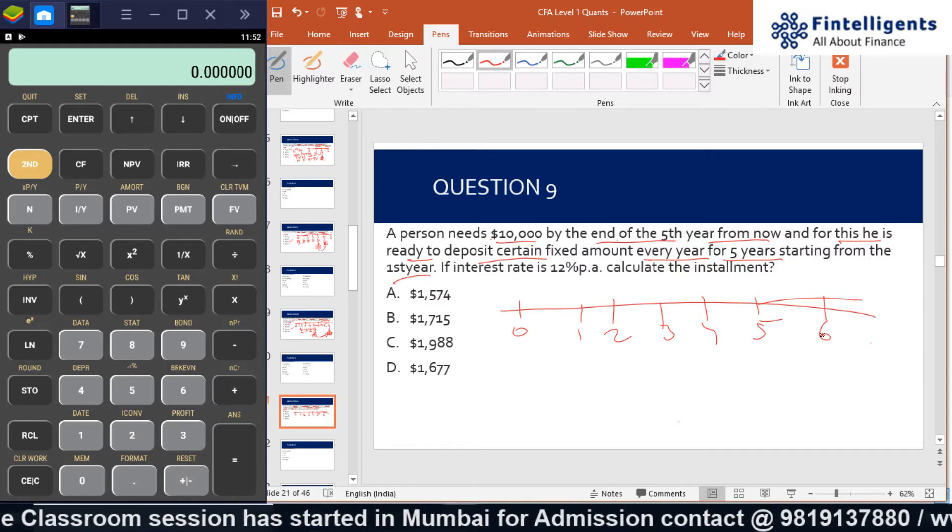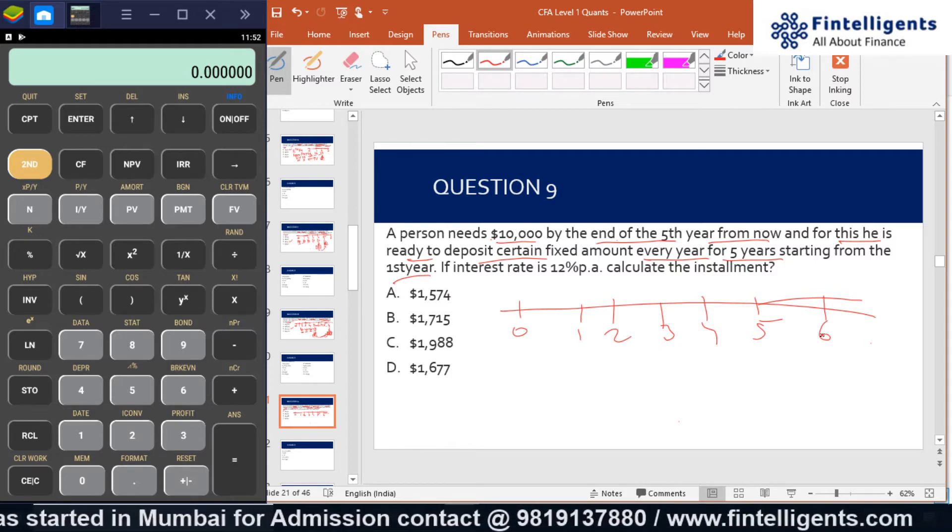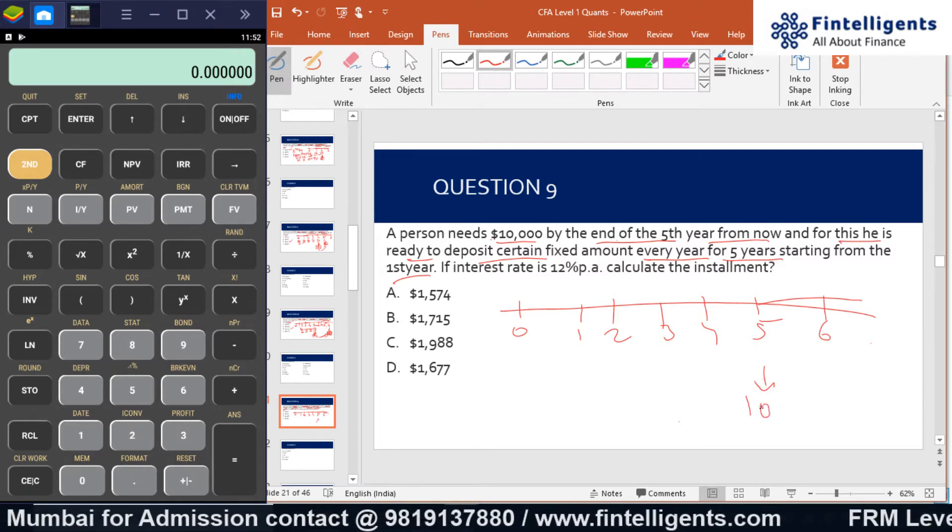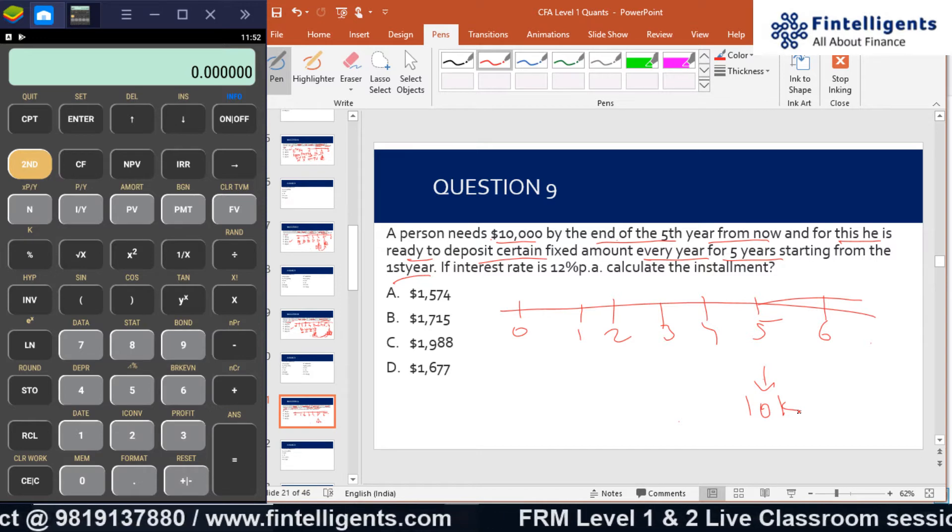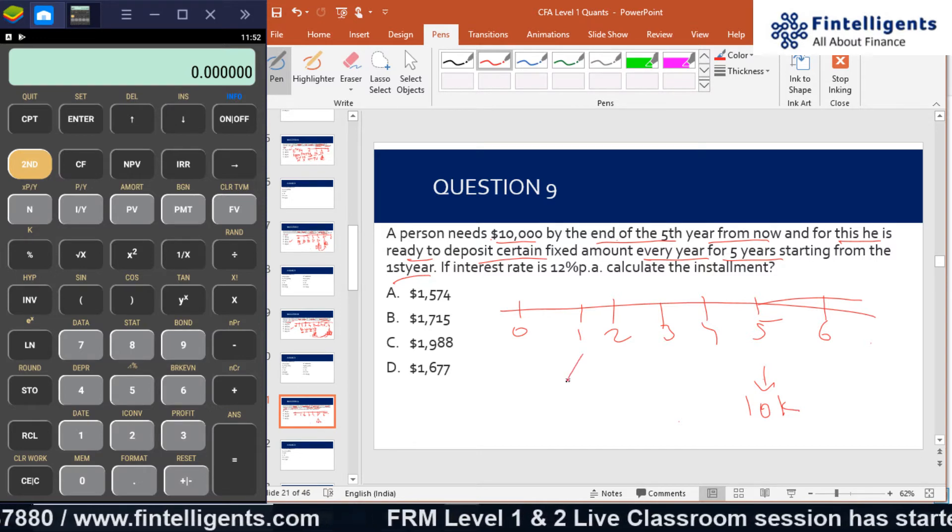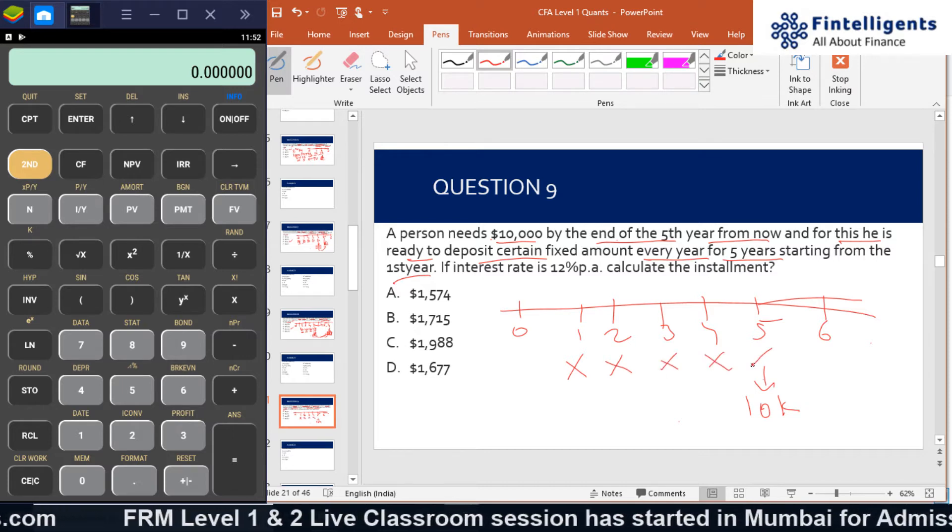So the person needs $10,000 by the end of the fifth year from now, that means over here he needs $10,000 and he's ready to deposit a certain fixed amount every year for five years starting from the first year. That means the first fixed amount is over here, second, third, fourth, and fifth.